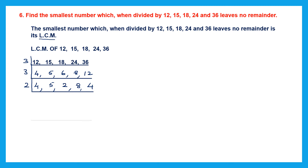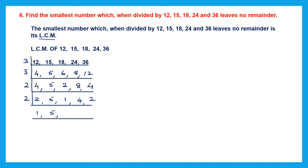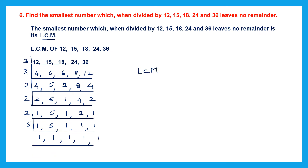Now divide using 2: 2 twos are 4, bring down 5, 2 ones are 2, 2 fours are 8, 2 twos are 4. Continue dividing by 2: 2 ones are 2, bring down 5, then 2 twos are 4 and 2 ones are 2. Continue with 2 again: bring 1 down, 5 down, 1 down. 2 ones are 2 and 1. Now only 5 is left, so divide by 5: 5 ones are 5, then all ones remain. The LCM will be the product of all these divisors.